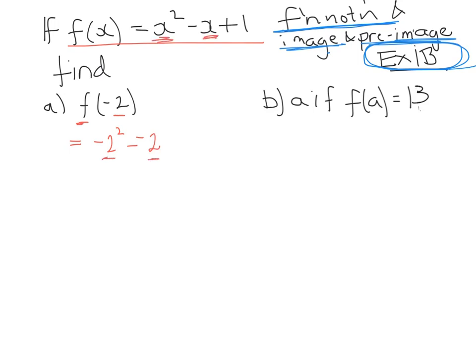So that would be minus 2 squared. Minus 2 squared is 4, minus and minus is a plus, and 4 plus 2 plus 1 is 7. So f of minus 2 is equal to 7. I'm hoping you remember that from last year.